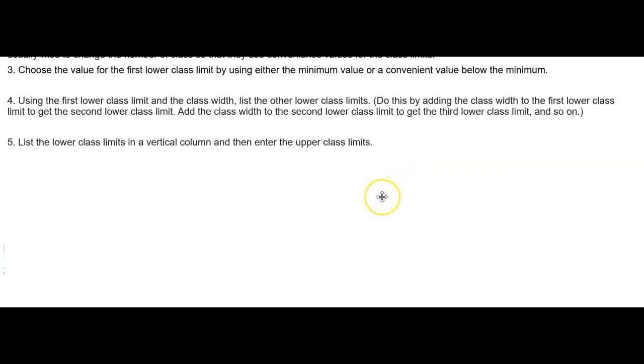Number five, you're going to list the lower class limits in a vertical column and then enter the upper class limits.